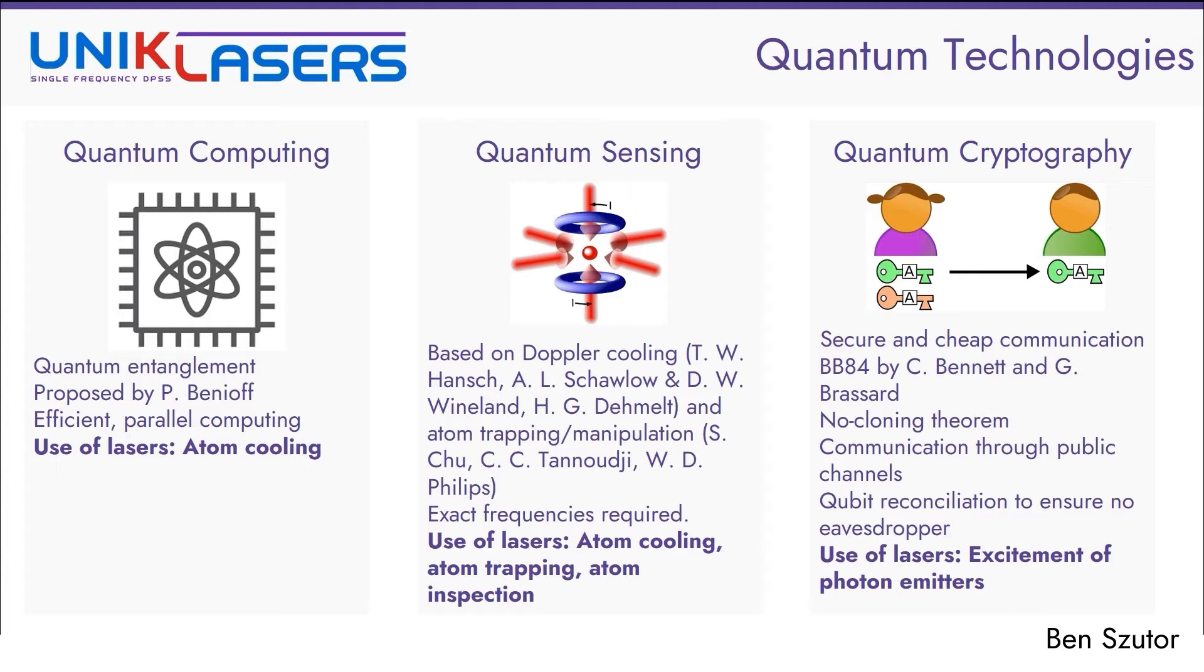Lasers are essential for these applications, from cooling to trapping and then to inspecting these atoms. The third and the final group is quantum cryptography, which is a very secure and relatively cheap method of communication. One of the most popular protocols is the BB84 proposed by Bennett and Brassard. So this protocol uses characteristics such as the non-cloning theorem. In this case, when Alice sends a message to Bob, their information is reconciliated, so an eavesdropper is always detected. And even for these technologies, lasers can be handy for single photon emitters, which can use, for example, two atom or two photon absorption, which require very stable output wavelengths.